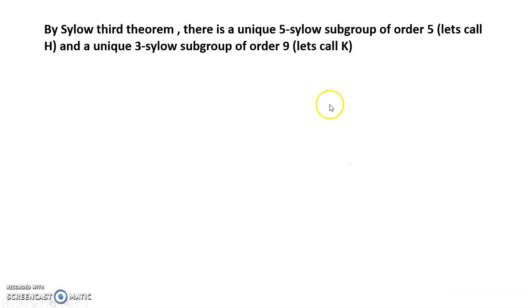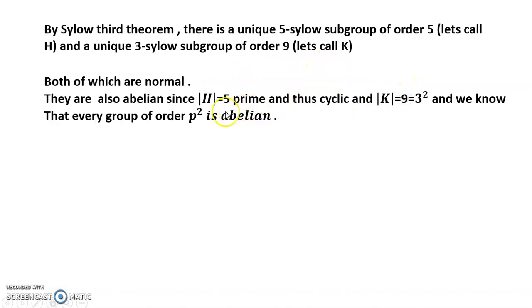There is a unique 5-Sylow subgroup of order 5, let's call it H, and a unique 3-Sylow subgroup of order 9, let's call it K. Both are normal.